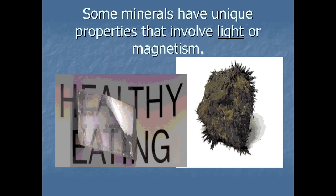Some minerals have unique properties, such as those related to light or magnetism. The mineral calcite has the ability for light to pass through it, so you can actually read and see through this mineral. The other mineral, magnetite, has the specific property that it is magnetic.